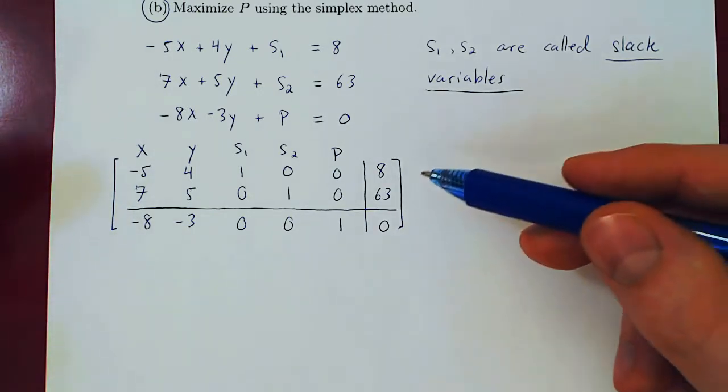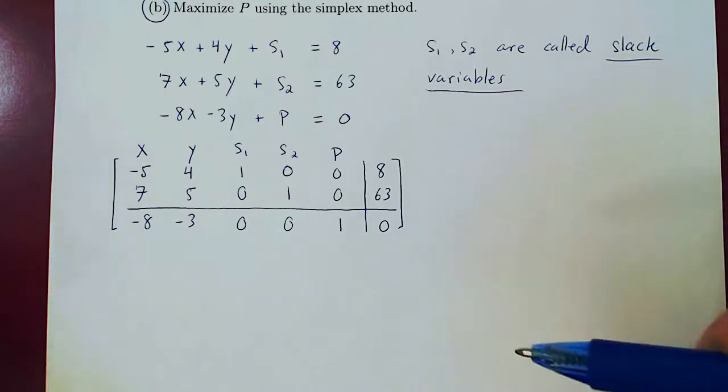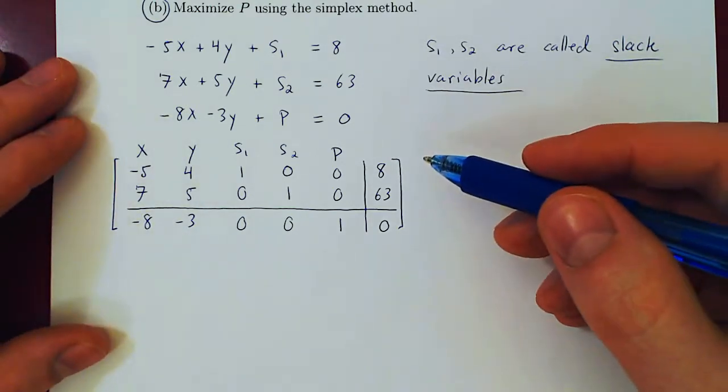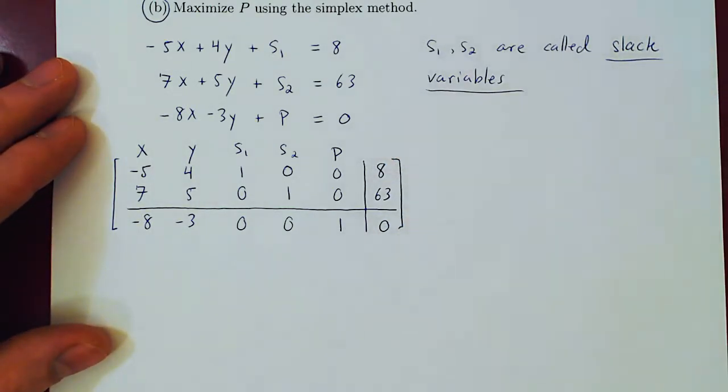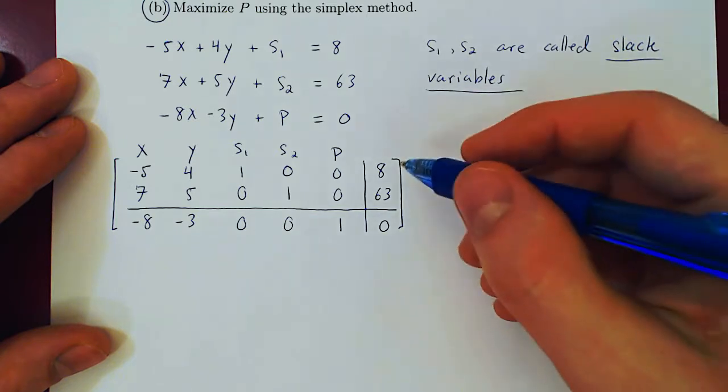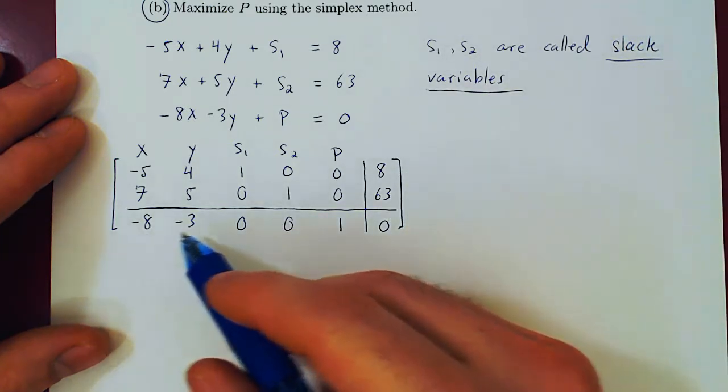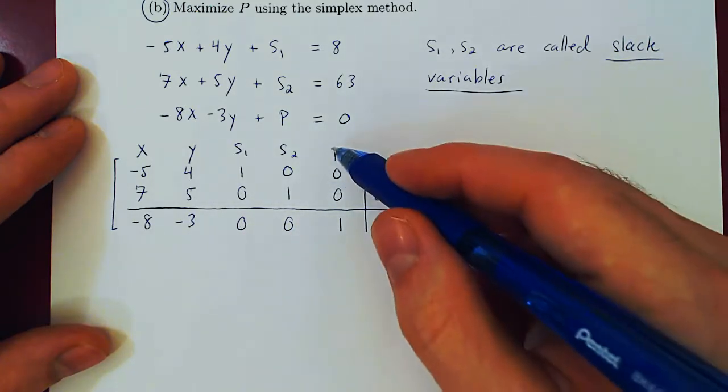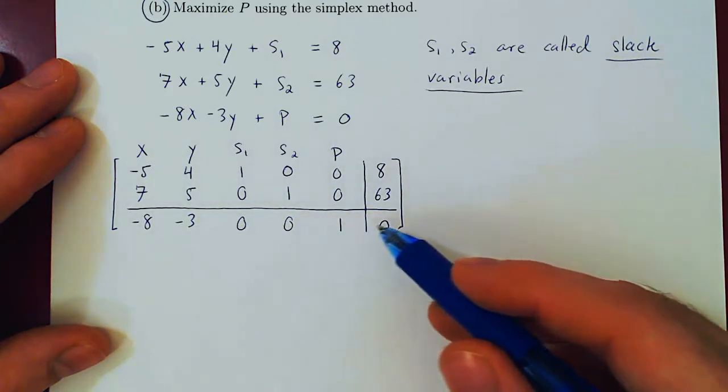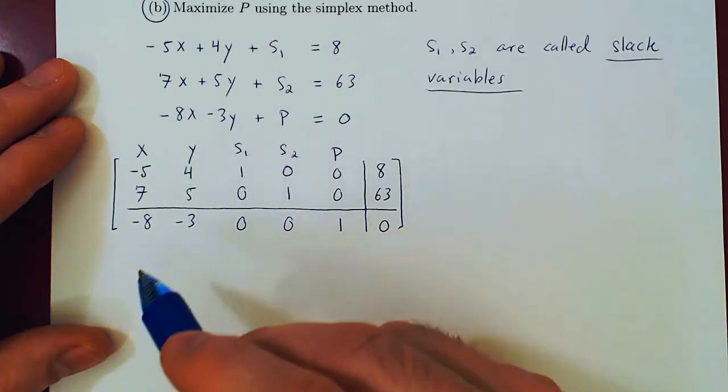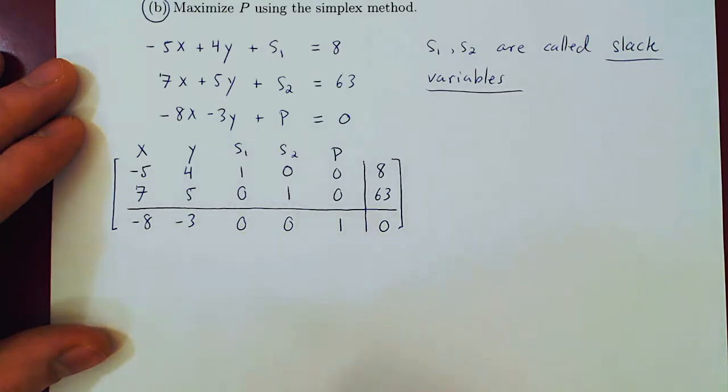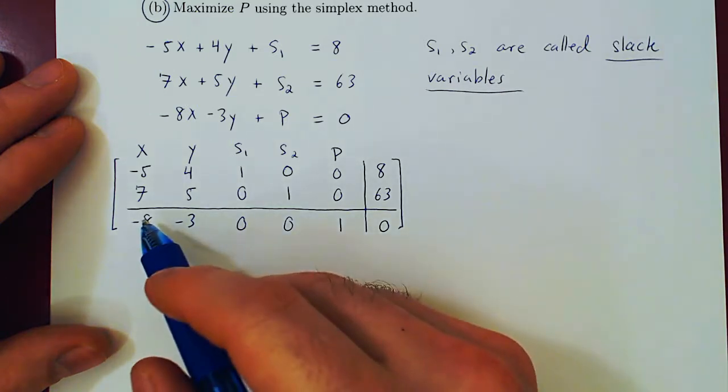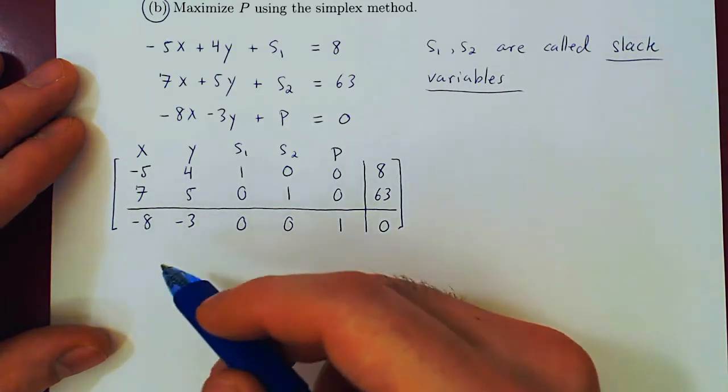The question is, how do we transform this matrix in order to obtain the optimal solution? What we'll do looks a little bit like row reduction but not exactly. There are some really key differences. Let me just walk you through the algorithm. If you look at your bottom row, there are two negative entries. We will reach the maximum possible value of p once there are no more negative values in the bottom row. There may be zero entries, not a problem, but we have to find a way to eliminate the negative entries, and this is done very specifically. We always pick the largest negative entry, now we ignore it, and we consider the entries above it in the column.